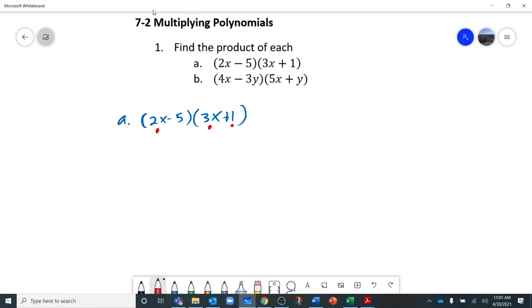So 2x times 3x gives me 6x squared. And then 2x times 1 is 2x, so plus 2x.